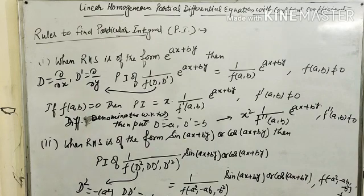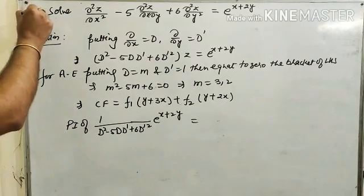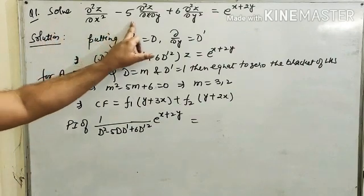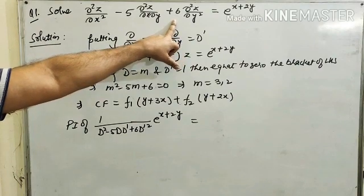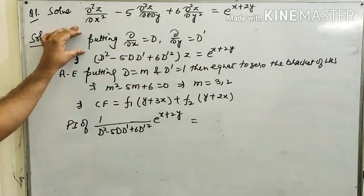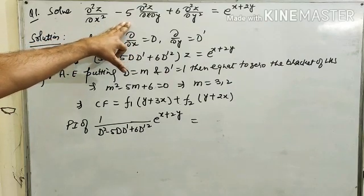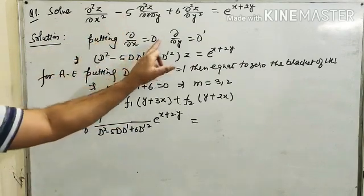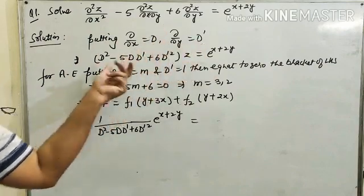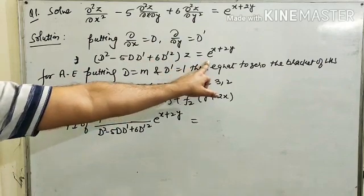We are moving on to some questions based on these formulas. Question 1: Solve del²z/del x² minus 5 del²z/del x del y plus 6 del²z/del y² equals e raised to power x plus 2y. To start this question, we identify this as a second order linear homogeneous partial differential equation with constant coefficient. We put del/del x equals D and del/del y equals D', giving D² minus 5DD' plus 6D'² of z equals e raised to power x plus 2y.